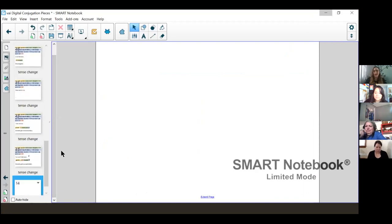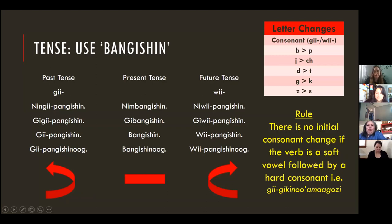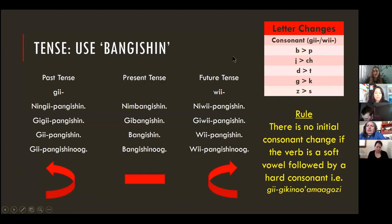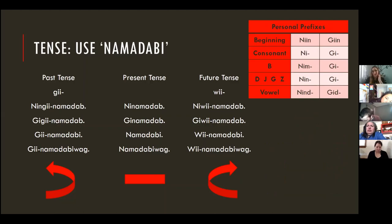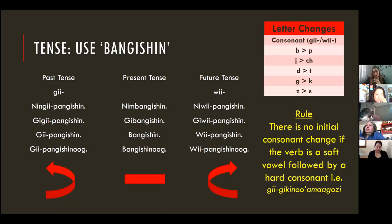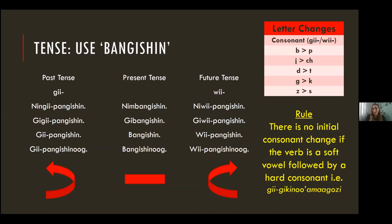Tense can get a little complicated, but those are the two main ones — remembering that personal prefixes may change and remembering the letter changes if needed. If you don't do them perfectly it's not the end of the world; a first-language speaker is still going to understand you.